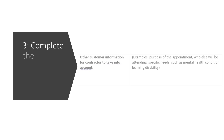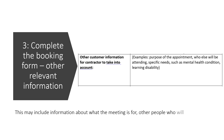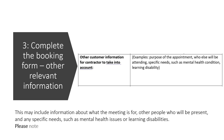Step three, continued — complete the booking form, other relevant information. This may include information about what the meeting is for, other people who will be present, and any specific needs such as mental health issues or learning disabilities. Please note that the form must be completed in full to ensure that it is processed.